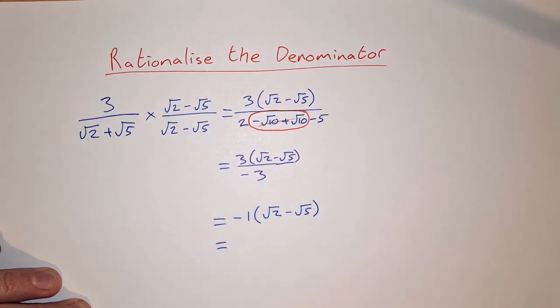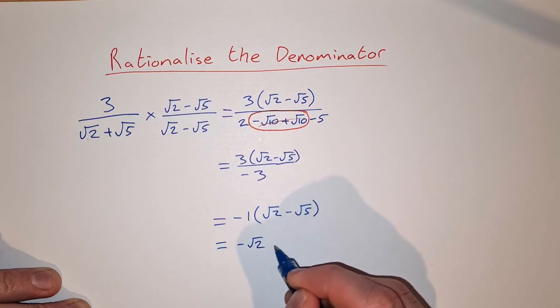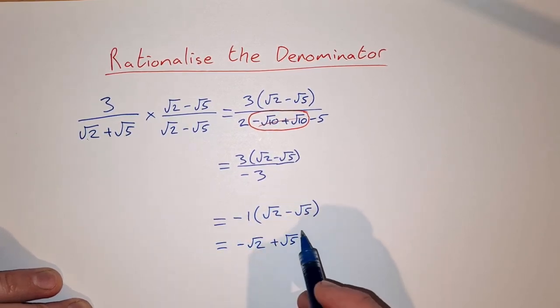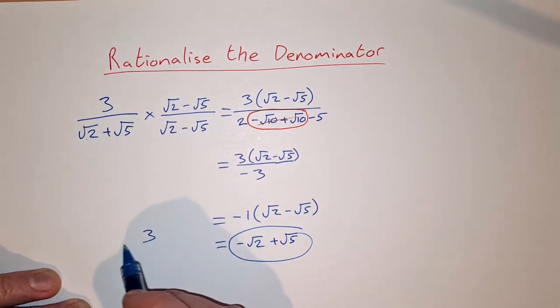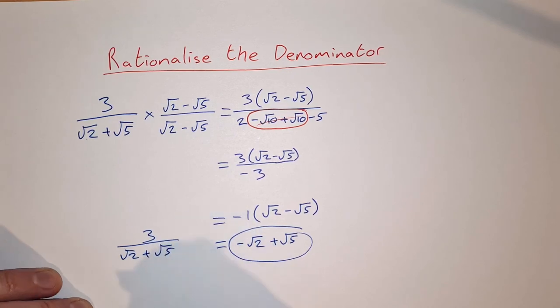So then we can just multiply out the brackets to get minus root 2 plus root 5. So that's the answer there. If we rewrite 3 over root 2 plus root 5 as a fraction where we rationalize the denominator, the answer is minus root 2 plus root 5.